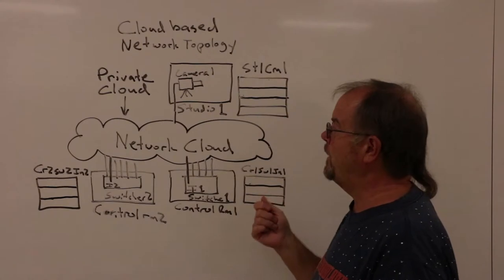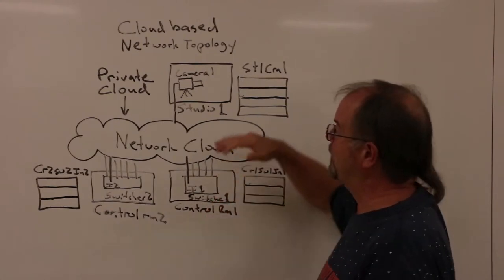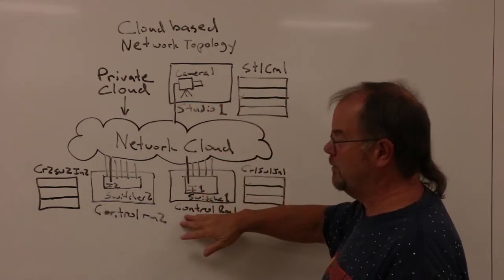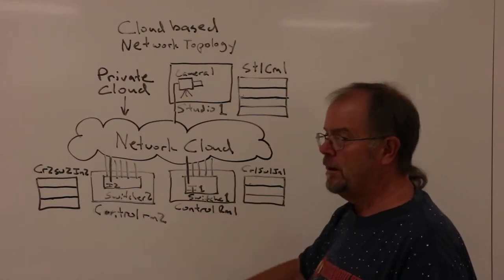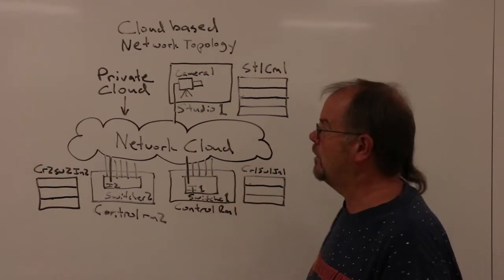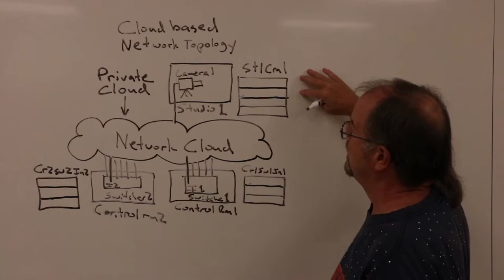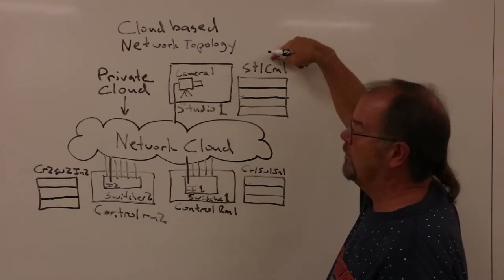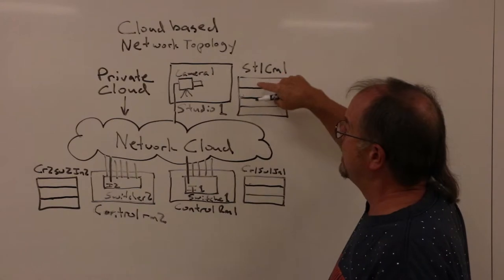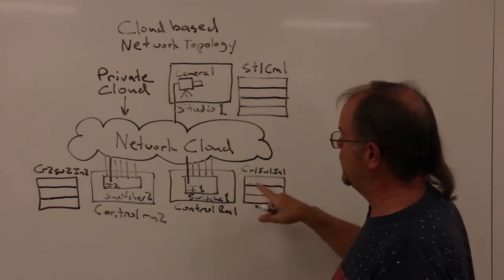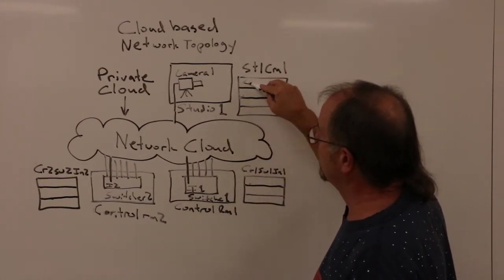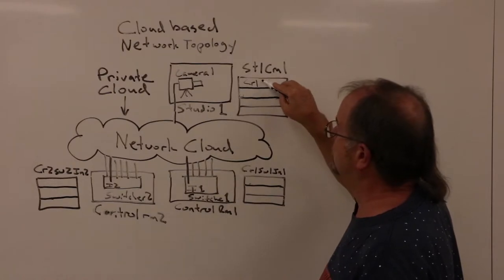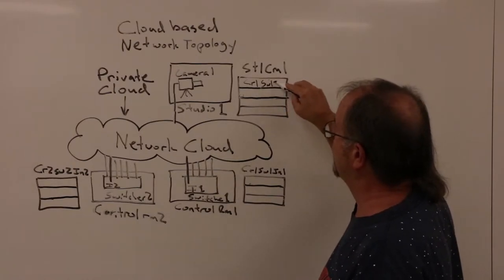Now in cloud-based topology, if you want to route signal from camera 1 in studio 1 to switcher 1 in control room 1, you do it through software. You have what's called a routing table. So in studio 1, camera 1 has a routing table that says I'm sending my output to control room 1, switcher 1, input 1.